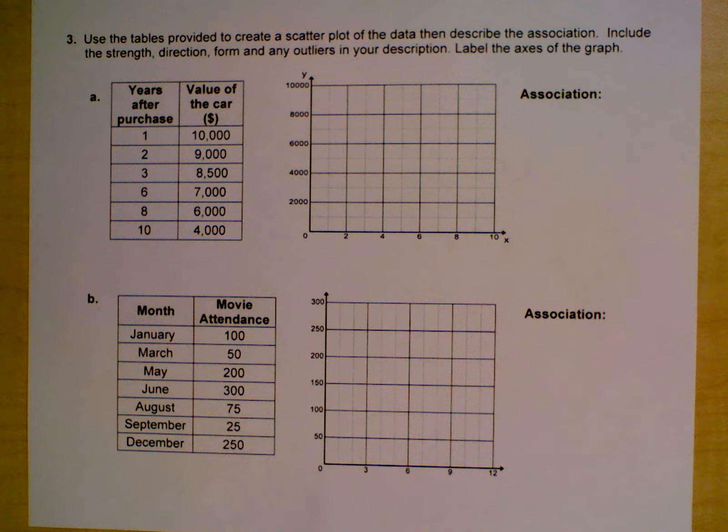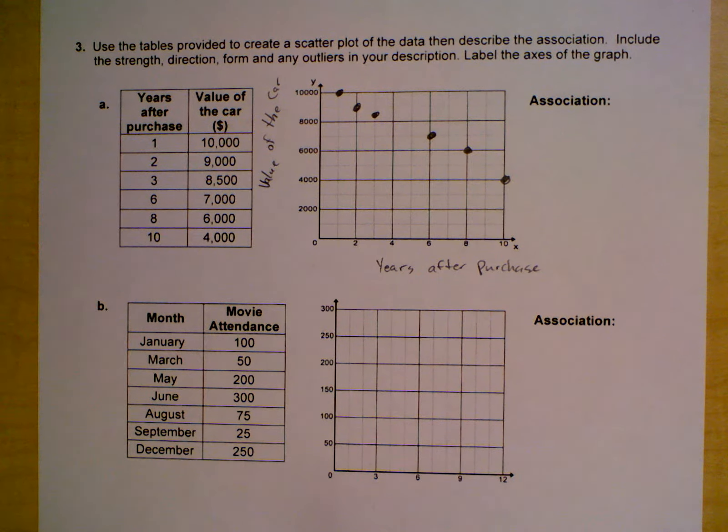When I come back, you'll see that I have already plotted and labeled the axes, so make sure you do that too. We've got the value of the car as the y-axis, the years after purchase as the x-axis, and I've plotted my points—one comma ten thousand and so on.